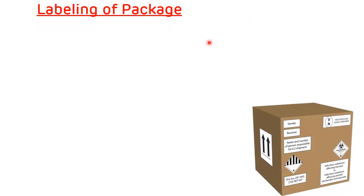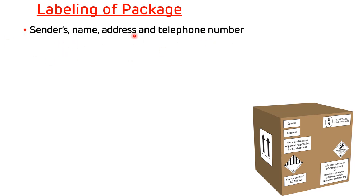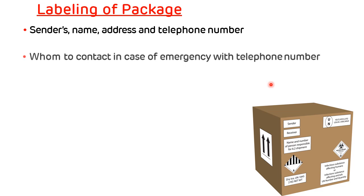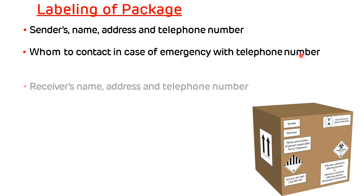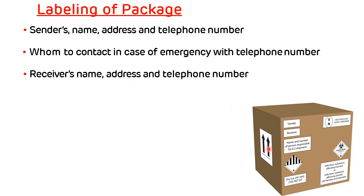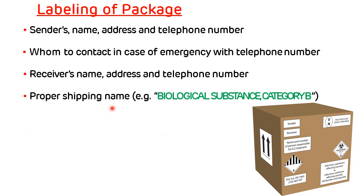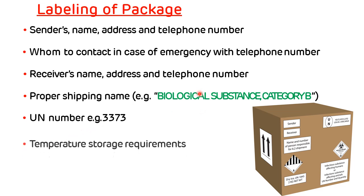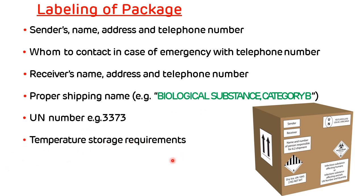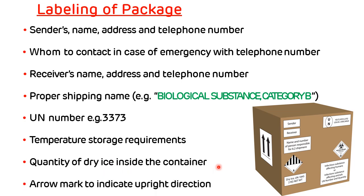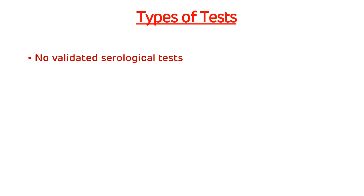Labeling of the packet should include: the sender's name, address, and telephone number; emergency contact information with telephone number; receiver's name, address, and telephone number; the upper shipping name, which is 'Biological Substance, Category B'; the UN number; temperature storage requirements; quantity of dry ice inside the container; and an arrow indicating the upright direction.